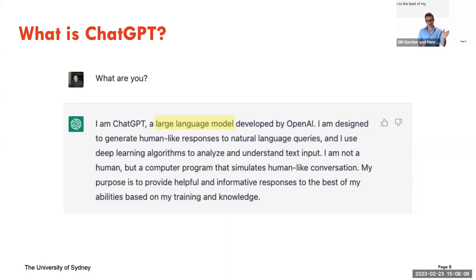It uses algorithms to analyze text and decide what is the statistically likely reply to give you. It's not a search engine — it doesn't query facts. It provides a response that is statistically likely based on what it has learned.